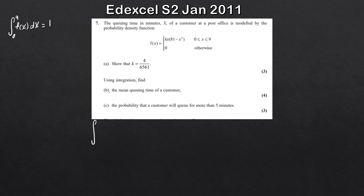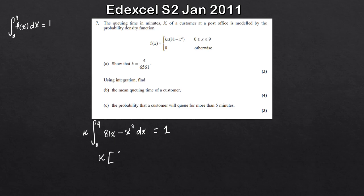Since k is just a constant, we use linearity and take it to the front. We integrate between 0 and 9: x times 81 gives 81x, and x times minus x squared gives minus x cubed, with respect to x. Integrating: 81x becomes 81x squared divided by 2, and minus x cubed becomes minus x to the 4 divided by 4, evaluated between 0 and 9. All of this times k equals 1.